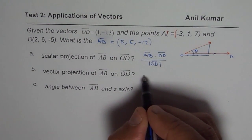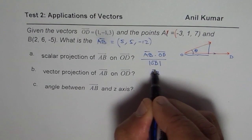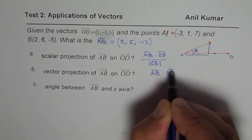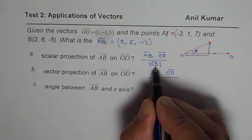So the vector projection formula will be AB dot OD. When you multiply by the unit vector, this gets squared.